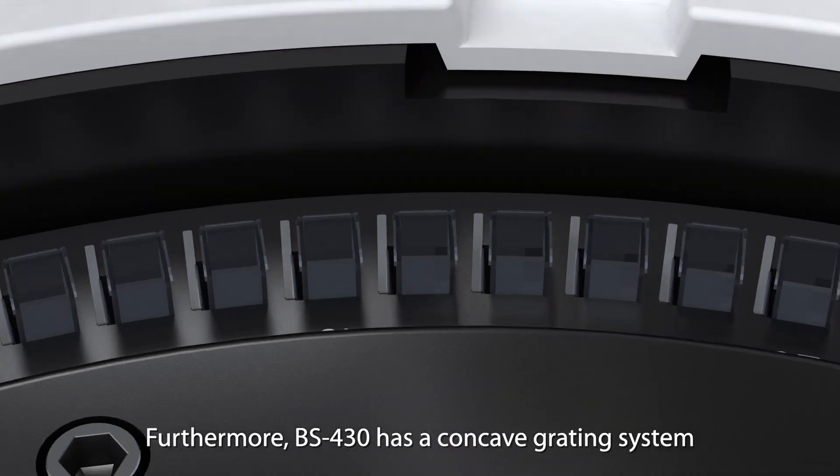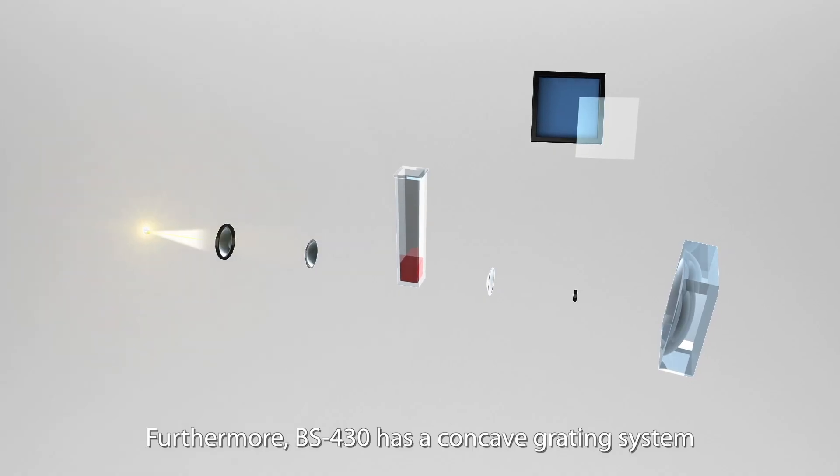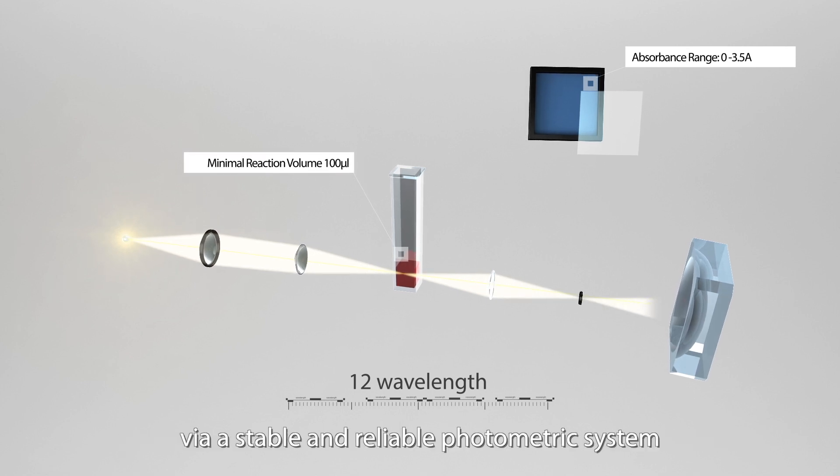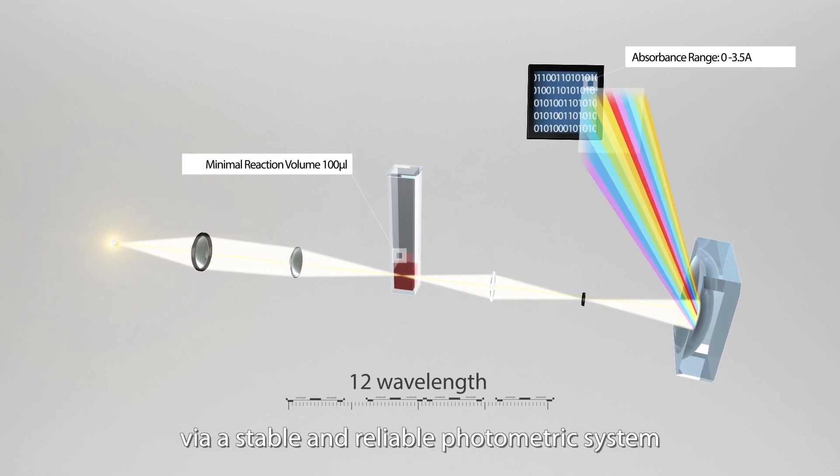Furthermore, BS430 has a concave grading system, providing 12 wavelengths, and ensuring accurate results via a stable and reliable photometric system.